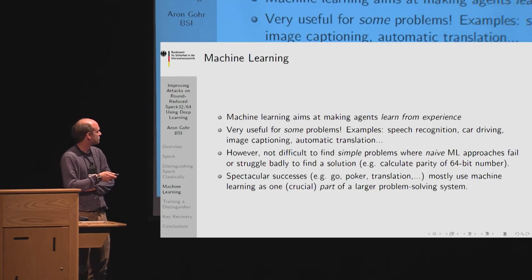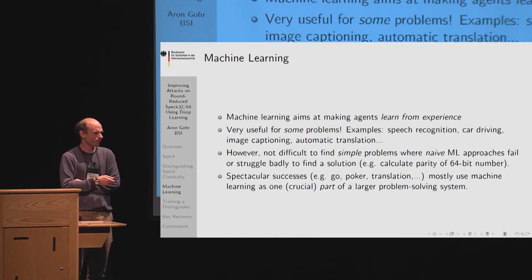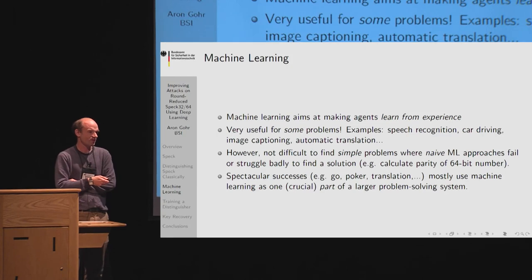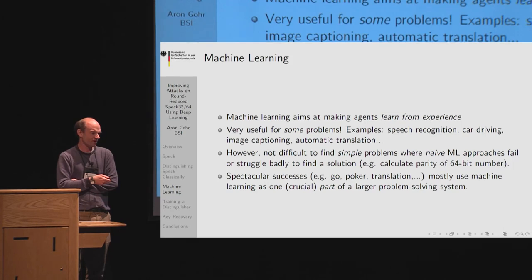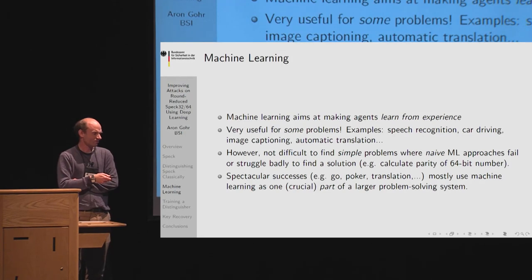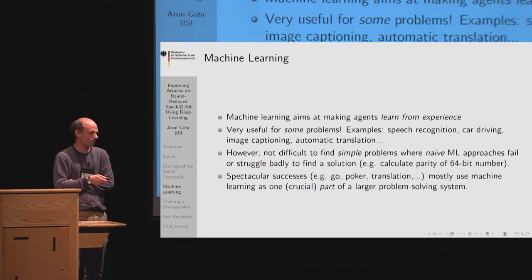Machine learning is an umbrella term for techniques that aim to make machines learn from experience. It is useful for some high-profile problems, but it's also not difficult to find simple problems where a naive ML approach would fail — for instance, computing the parity of a 64-bit number without appropriate training data would be a hard problem for a neural network. There have been spectacular successes recently in Go, poker, and machine translation, and importantly these mostly use machine learning as one crucial part of a larger problem-solving system — which is no different here.